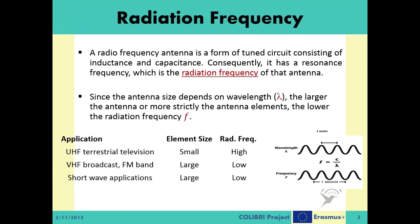A radiofrequency antenna is a form of tuned circuit consisting of inductance and capacitance. Consequently, it has a resonance frequency, which is also called the radiation frequency of that antenna. This is the frequency where the capacitive and inductive reactances cancel each other out. At this point, the radiofrequency antenna appears purely resistive, with resistance being a combination of the loss resistance and the radiation resistance.